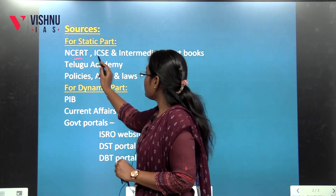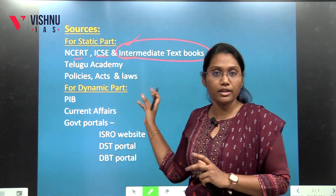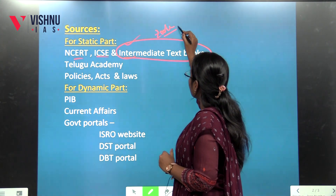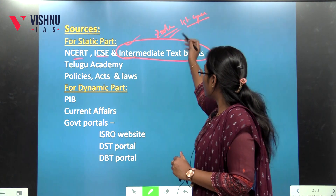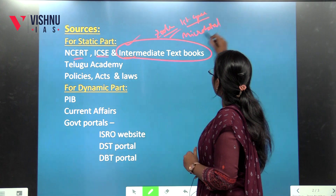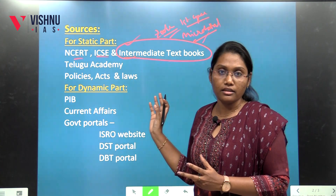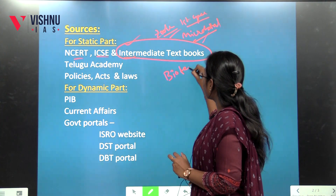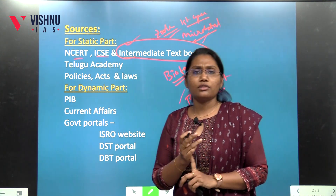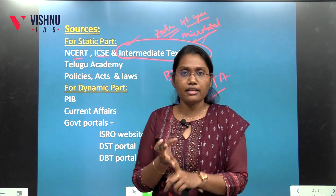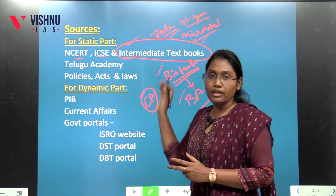We know that NCERT, ICSE, and Intermediate Textbooks — this is a little bit neglected. If you cover a few chapters, there are many static parts. For example, Zoology — Zoology first year textbook from Telugu Academy. We are going to use an intermediate first year book. The first year book covers the microbiome, and Microbial Infections would be covered in this book. If you cover all dimensions in this book — biotechnology, tissue culture, each and every part, applications, examples, principles, process, procedures — and static parts of the textbooks. In addition, if you want to use current affairs, you can use these parts to cover.